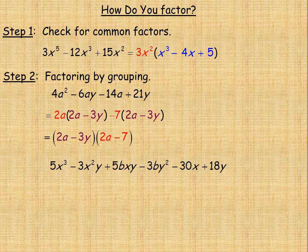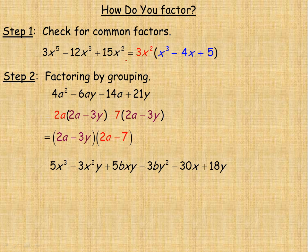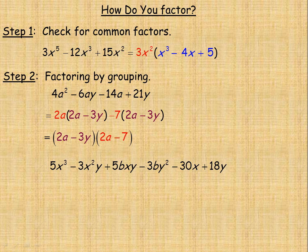Some people think there should be a square on the 2a minus 3y because we factored it out of two places. But it would only be squared if the original expression contained 2a minus 3y to a higher power. Looking back at the first example, we factored 3x squared out of three terms, yet it's not cubed. We factored it once out of each term, so it stays as 3x squared. Similarly, we factored 2a minus 3y once out of each group, so it remains just 2a minus 3y.